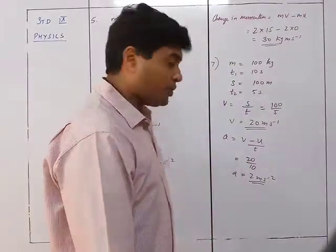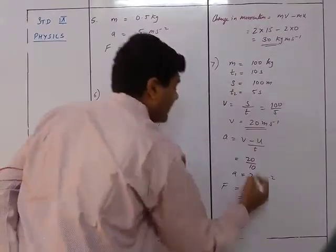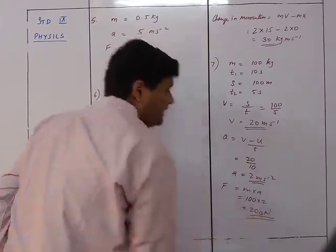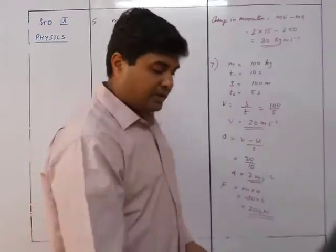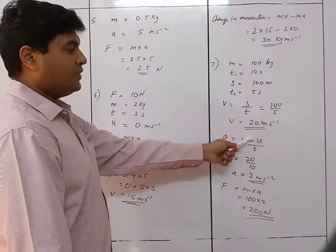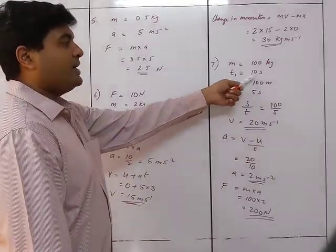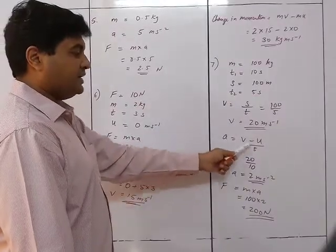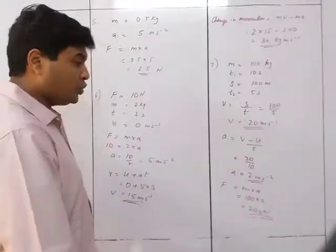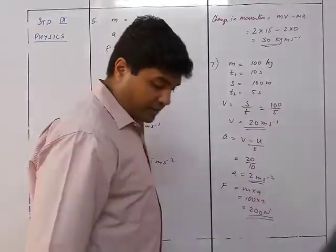The magnitude of force is F equals m times a equals 100 times 2 equals 200 Newton. So the three answers for question 7 are: velocity is 20 meter per second, acceleration is 2 meter per second squared, and force is 200 Newton.